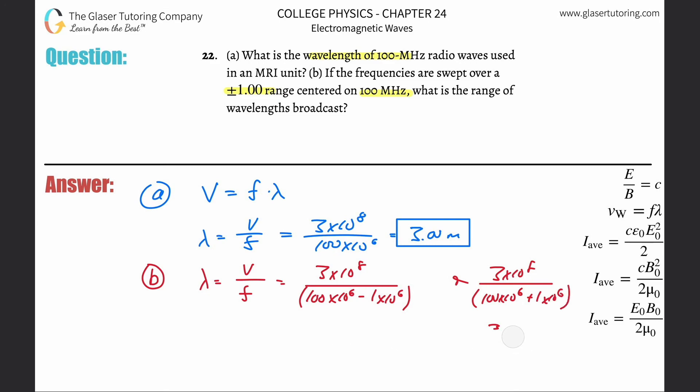So basically, instead of them both being three, the answers would now be three times 10 to the eight divided by 100 times 10 to the sixth minus one times 10 to the sixth, which is 3.03 meters. And then the other one would be three times 10 to the eight divided by 101 times 10 to the sixth, and that's 2.97. So maybe that's what they wanted, but your guess is as good as mine on that one.